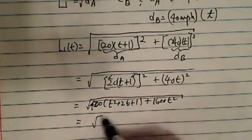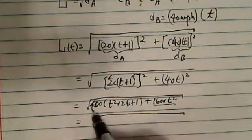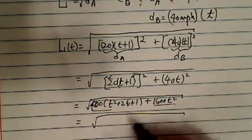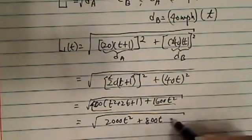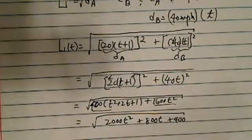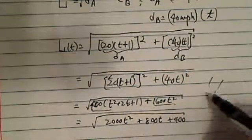And then plus 1600 T squared, and then you're going to collect the like terms over here. And then one more time, so we have 1600 T squared plus 400 T squared, and I have 2000 T squared plus 800 T, and then plus 400. So here's my equation. Have a confident day.